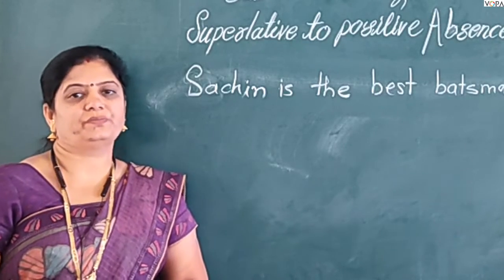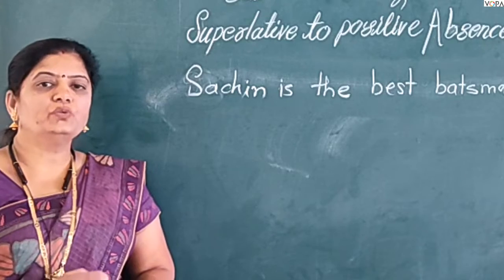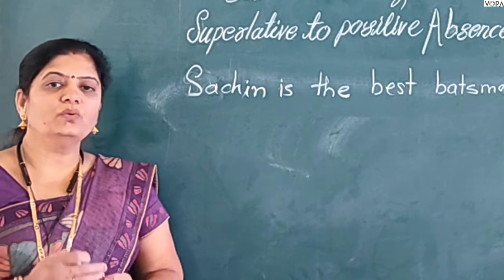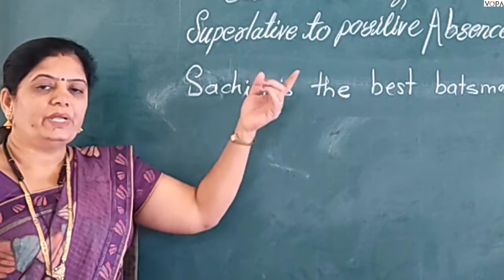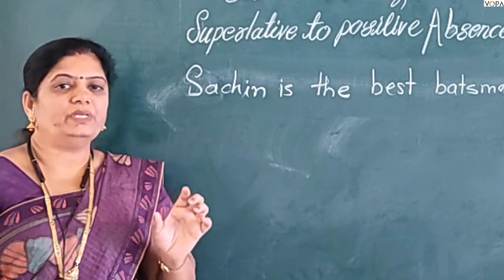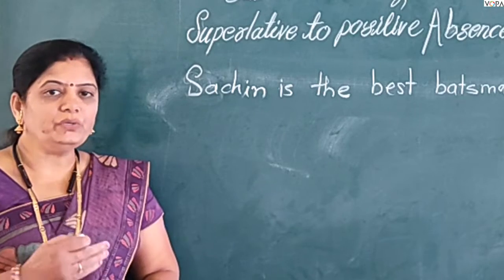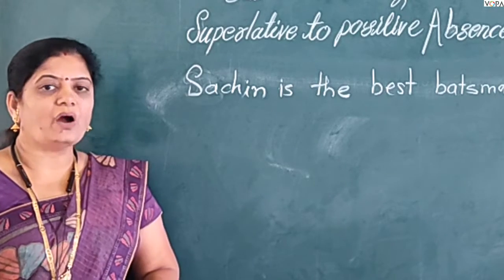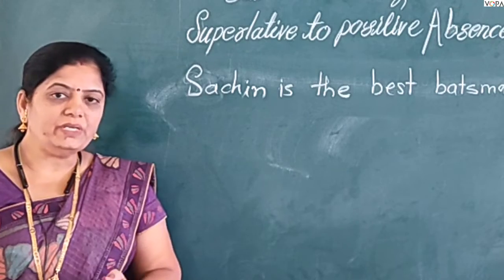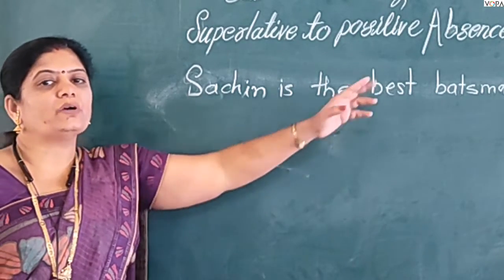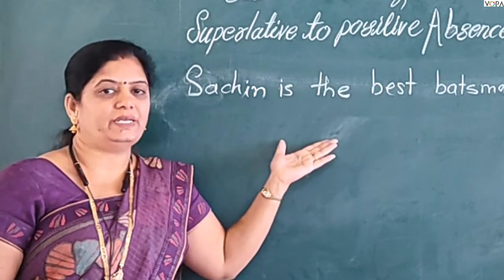Now students, we have learned how to change a superlative degree sentence to a positive degree sentence. Now we are going to learn how to change a superlative degree sentence to a positive degree sentence in the absence of 'one of' in the sentence.